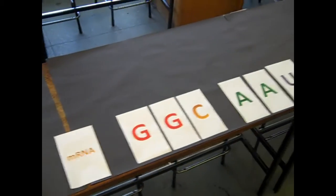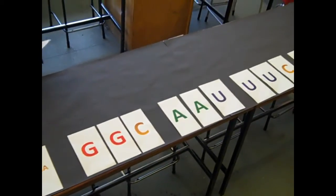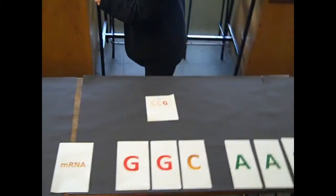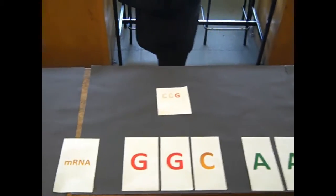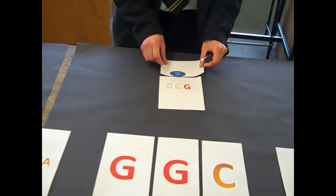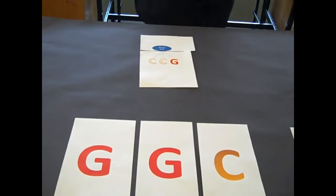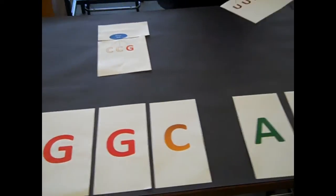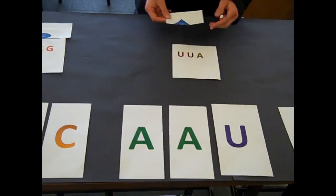Then, a matching tRNA codon comes along and it has a specific amino acid attached to it. Another matching tRNA codon will come along and will bring along its own amino acid too.